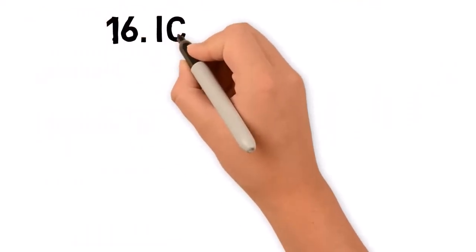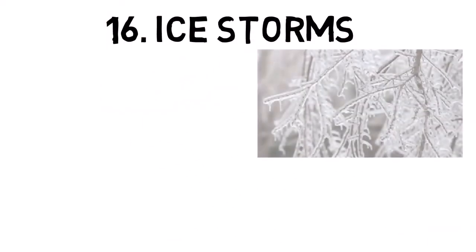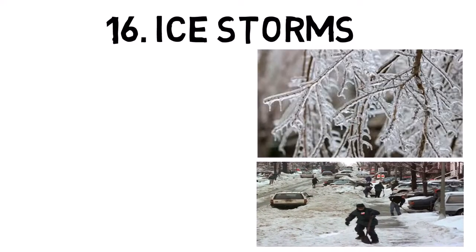Ice storms occur when freezing rain coats surfaces with a thick layer of ice. These storms can cause widespread power outages by bringing down power lines and trees, and they make travel extremely dangerous due to icy roads.